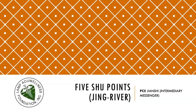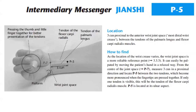Now let's discuss PC5, Qian Shi, Intermediary Messenger at Jing River Point. PC5 is located 3-cun proximal to the anterior wrist joint space, the most distal wrist crease, between the tendons of the palmaris longus and flexor carpi radialis muscles.